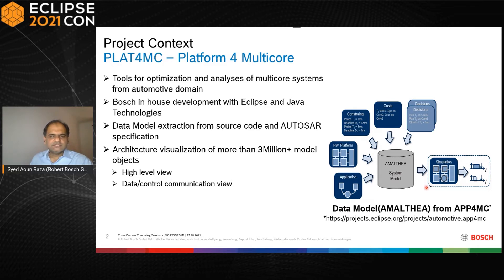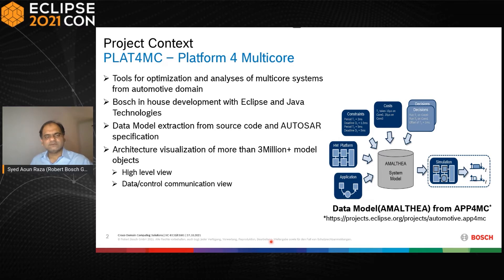The visualization we have done as part of the Platform-C tooling works on different levels. It starts from the component overview — what components exist in the system and how they are mapped on the hardware — and goes down to a very fine-grained level where you can see data flow, control flow, and how components communicate. The total number of objects involved goes from a few thousand to two million.